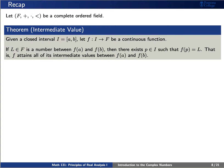let's pick a number l that is between f of a and f of b. Then there exists a point p in this interval i from a to b such that f of p equals l. That is, a continuous function f attains all of its intermediate values between f of a and f of b.